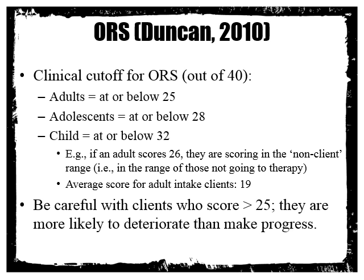Be careful with clients who score more than 25 — they are more likely to deteriorate than make progress as therapy goes on. If you are an adult with a score above 25, you may think you're doing pretty well, but then when you get into difficult issues in counselling — your past, behaviours you're trying to change — your ORS score may dip slightly. So just be aware that can happen.